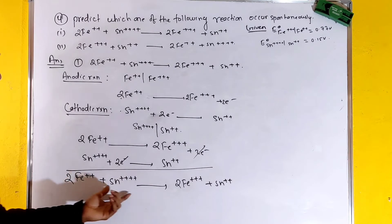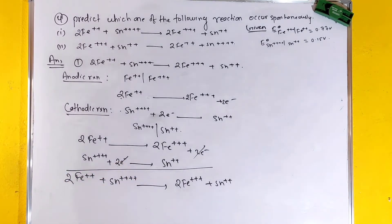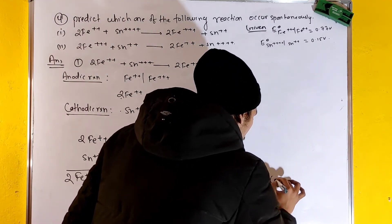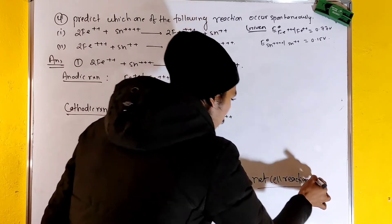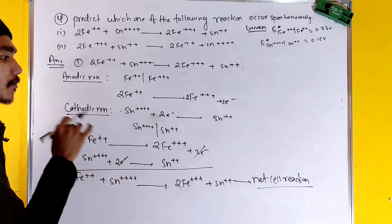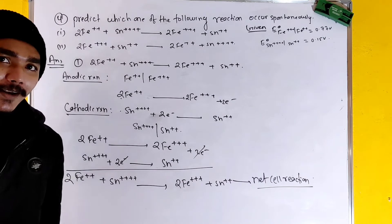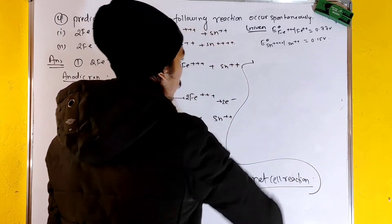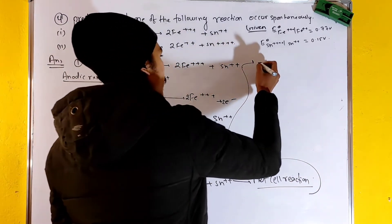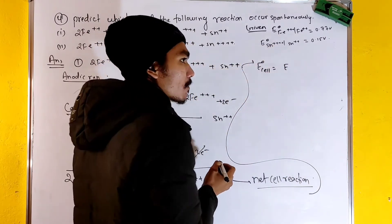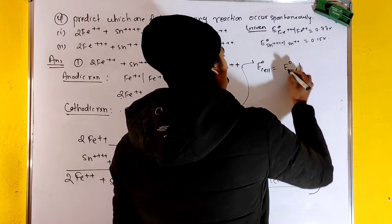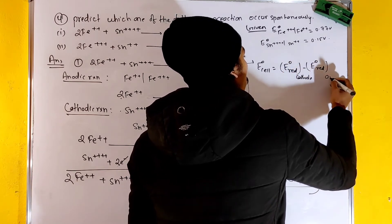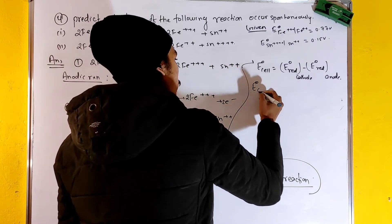That means the complete cell reaction. This is the net cell reaction. We need to take the table in order and find the net cell reactions. Net E°cell — E°cell is E°reduction of cathode minus E°reduction of anode.